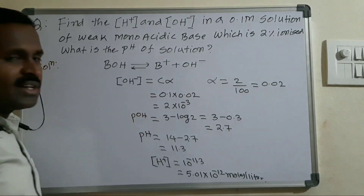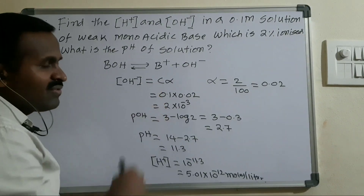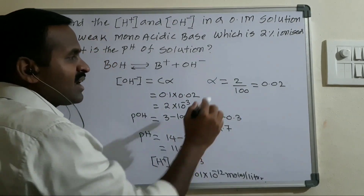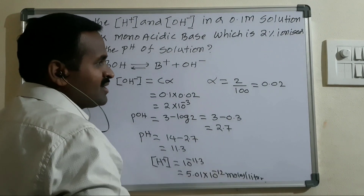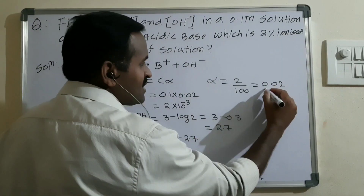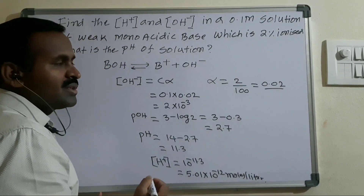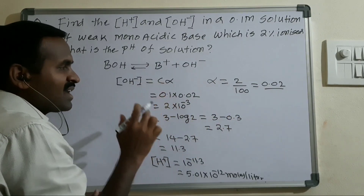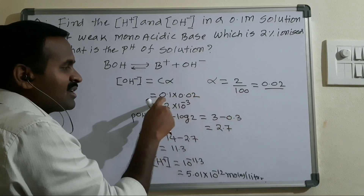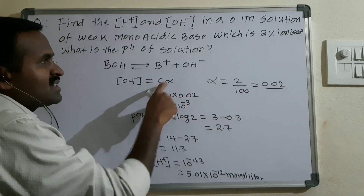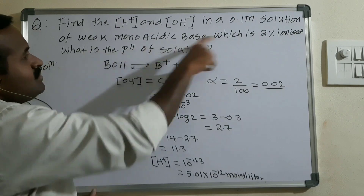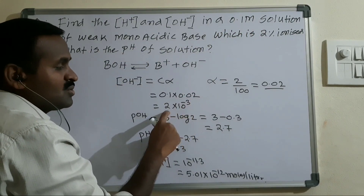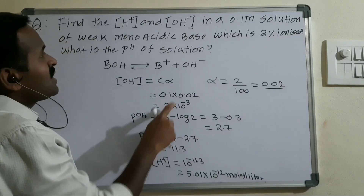We know that OH⁻ ion concentration is always equal to Cα. Since the base is 2% ionized, alpha equals 2/100, which is 0.02. Substituting, OH⁻ ion concentration = C × α = 0.1 × 0.02 = 2 × 10⁻³.